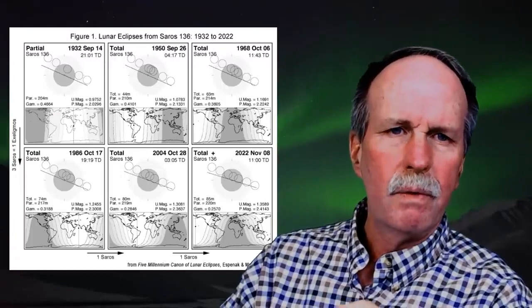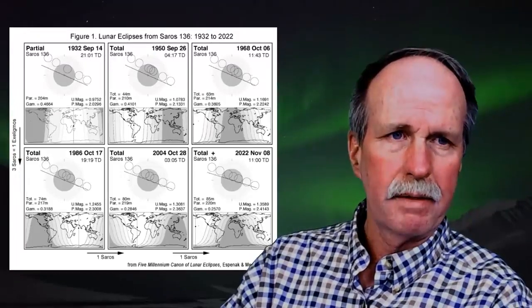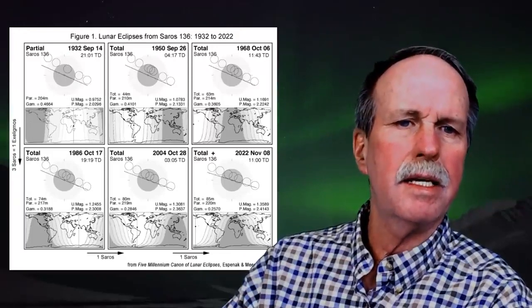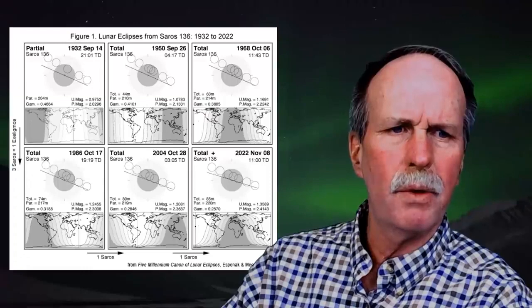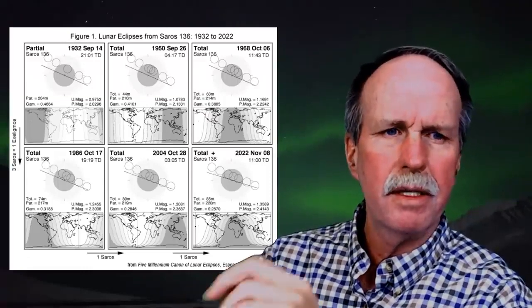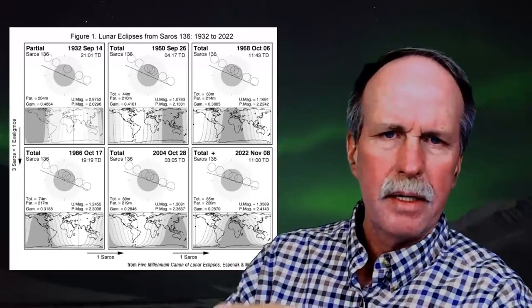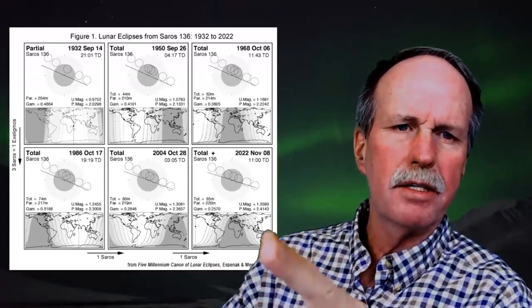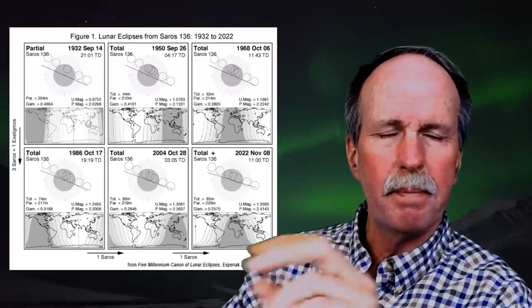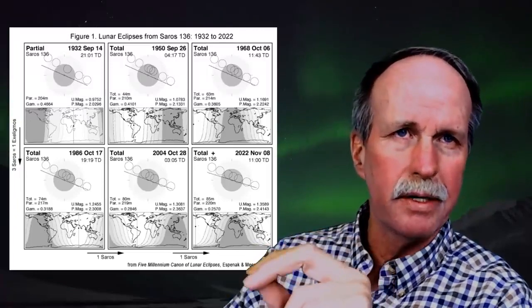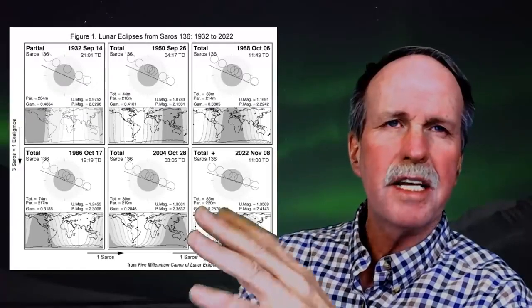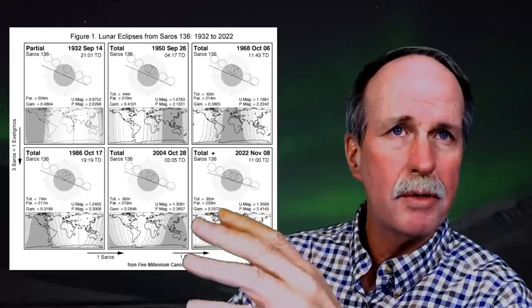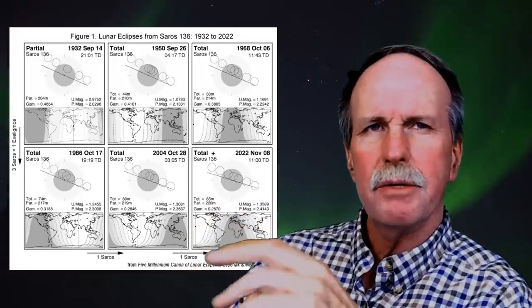18 years later, in 1950, we see a very similar path. Again, in 1968, 1986, 2004, and we'll have one in this same cycle in 2022. Notice how the date kind of moves forward a little bit, and there are very subtle changes in the path of the eclipse in relationship to the ecliptic. This has to do with factors beyond the Saros cycle, specifically the wobble of the earth, the wobble of the moon, etc.